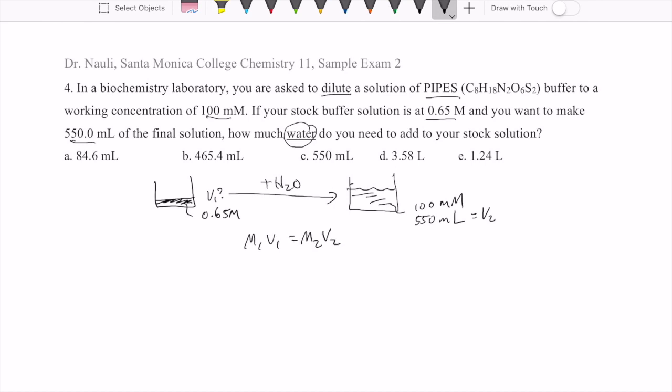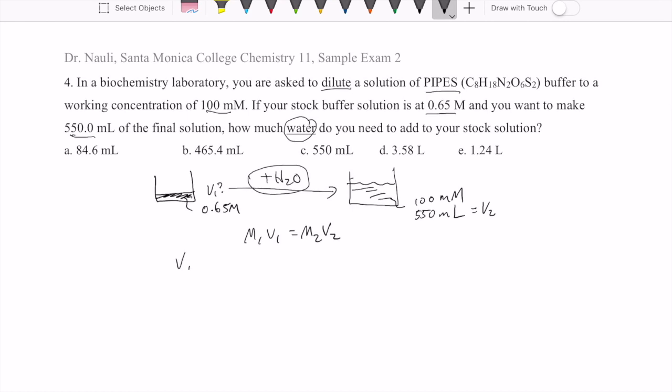Now, one of the things you want to be careful about is the question actually asks for water that you're going to need to add to make solution one become solution two. So if you want the volume of water, what you need to do is figure out what the final volume of the solution is, which is V2, and then subtract from that the volume of solution one, V1.